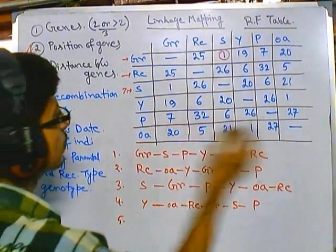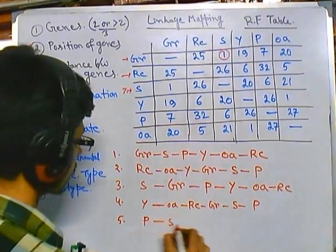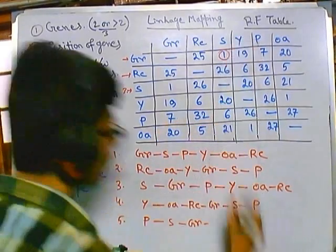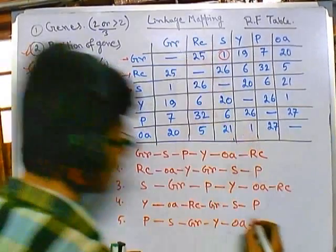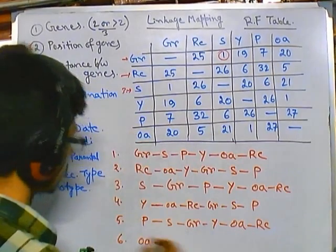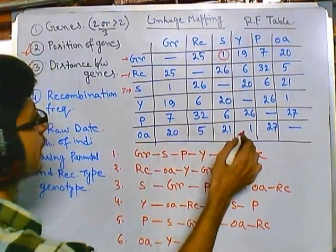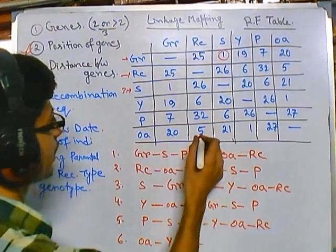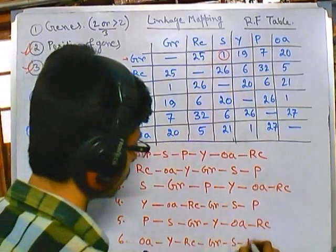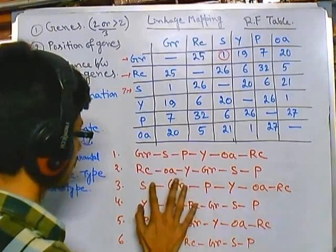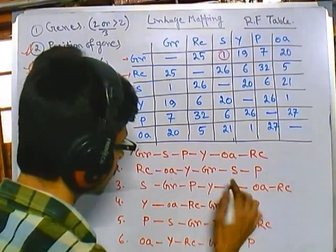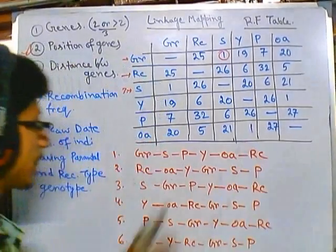The fifth row: the least value is six with S, so P is the starting point. After that we get seven, which is GR. After that we get 26, which is Y. Then 27, which is OA. Then 32, which is RC. So the P row arrangement is: P, S, GR, Y, OA, RC. The sixth row starts with OA. After OA we get one with Y. Then five with RC. Then 20 with GR. Then 21 with S. Then 27 with P. So the OA row arrangement is: OA, Y, RC, GR, S, P.